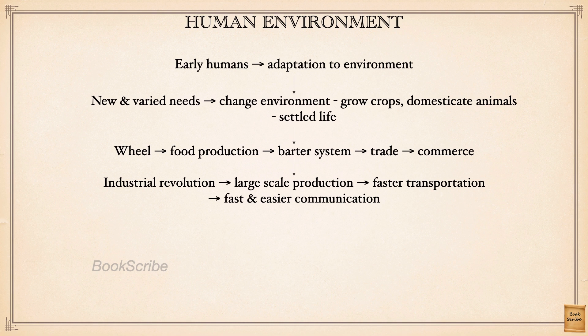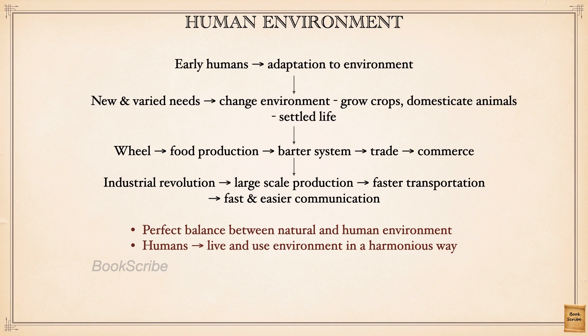For all our needs we are dependent on the environment — we manufacture mobile phones, televisions, cars, aeroplanes, and more. We may ask should we go back to live like early humans, but that may not be possible. Just as in summer we eat something chilled and in winter something hot, we balance ourselves. Similarly, when we take something from the environment we should balance it — only when there is a balance between our needs and nature can we have a harmonious way of life on earth.